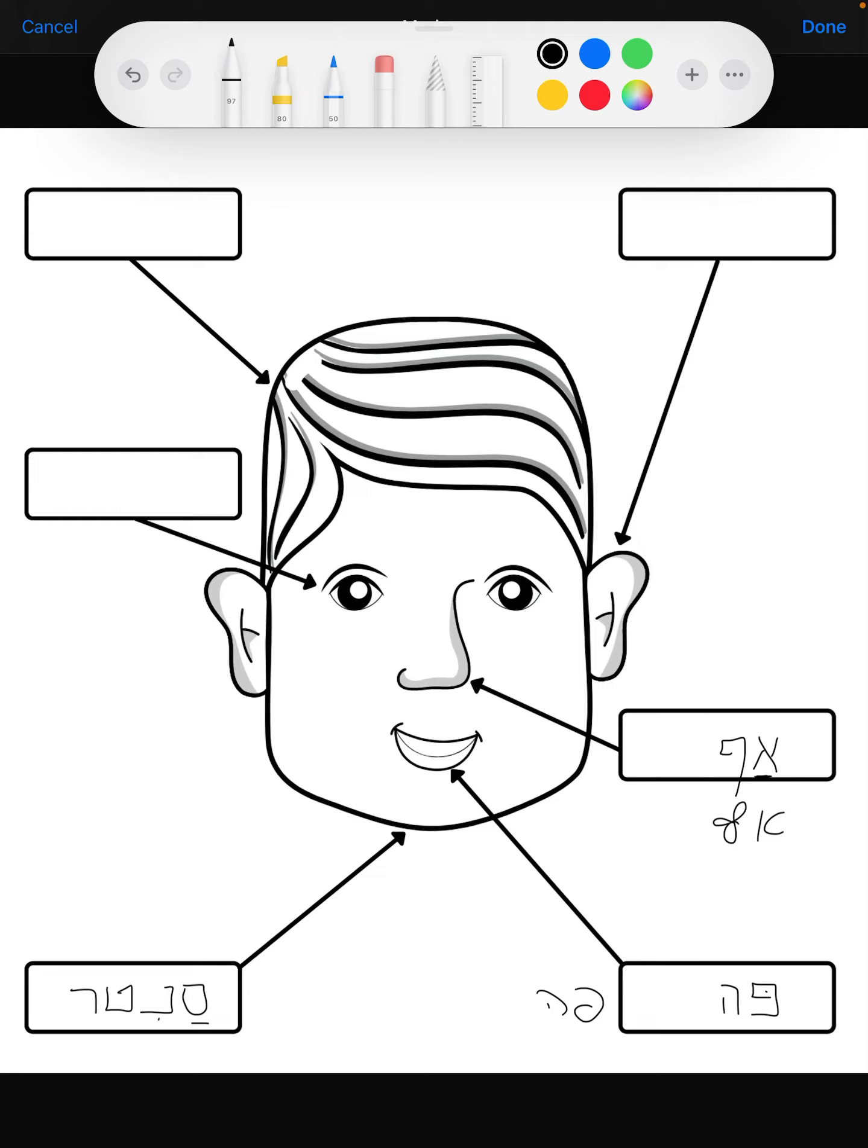Under the samech you have a patach again, this little line which signifies an a sound, sa. Under the nun you have two dots one under the other, it's a shva, it's an n sound. And under the tet you have two little dots over here that are called a tsere, it makes a te sound, so it's santer.